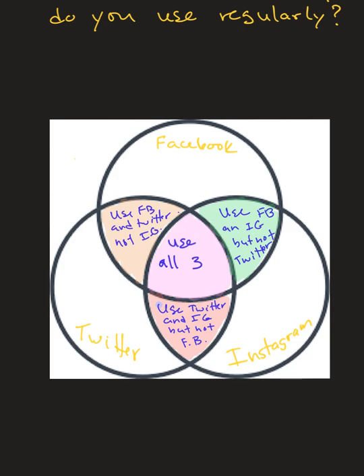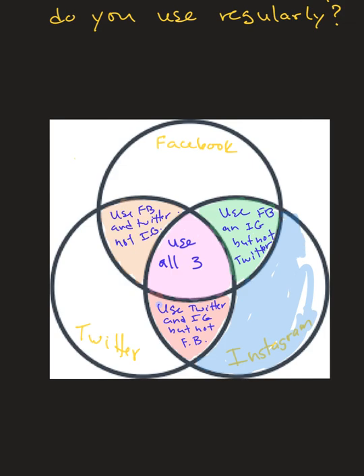Let's color this section over here. This is part of the Instagram circle. If people are in this area, we know a few things about them — they use Instagram. But what else do they use? Nothing. I like to call this the 'only' space — they only use Instagram. They don't use the other two because it's not overlapping with the other two circles.